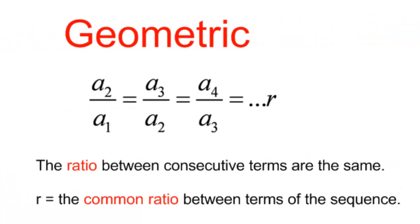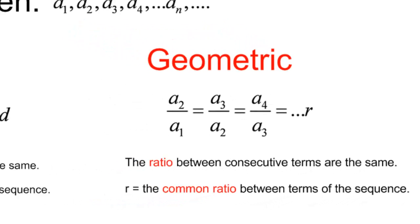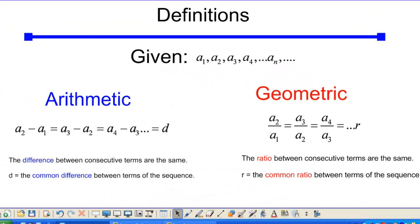Versus geometric has to do with the operation of multiplication. If you take the second term over the first term, the third over the second, or the fourth over the third, you end up with r, which is the common ratio between the terms of the sequence. So the basic definition, arithmetic has to do with the operation of addition, geometric has to do with the operation of multiplication.